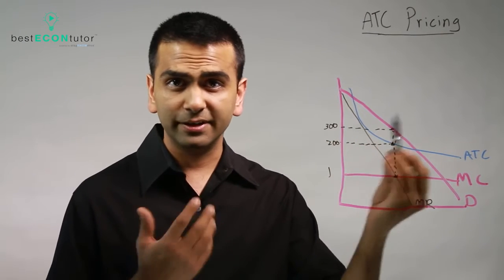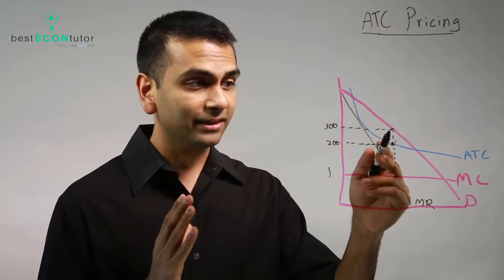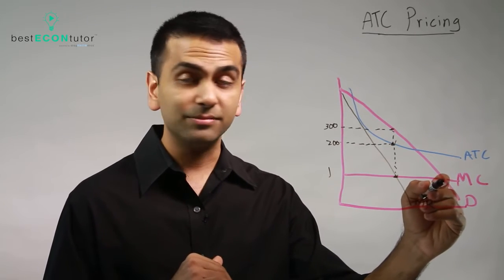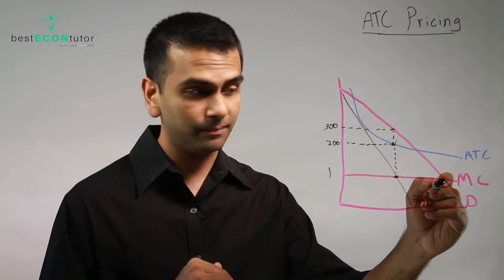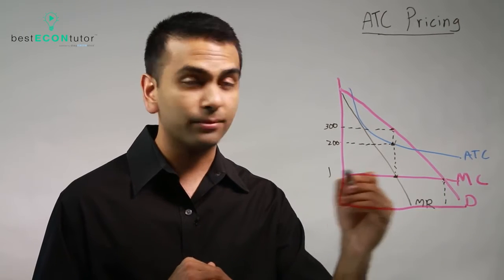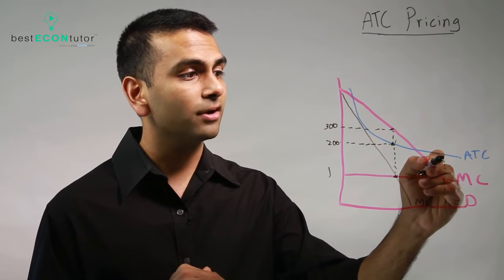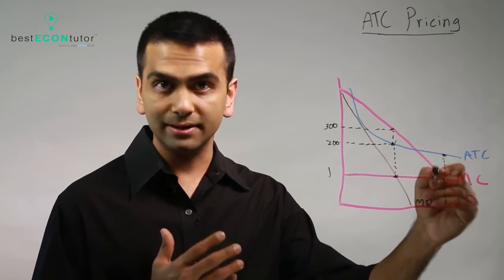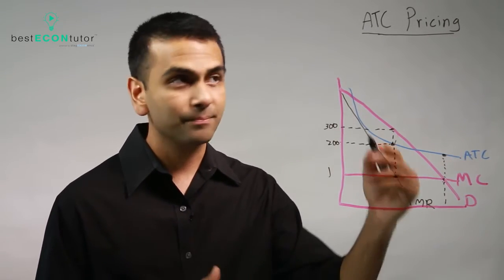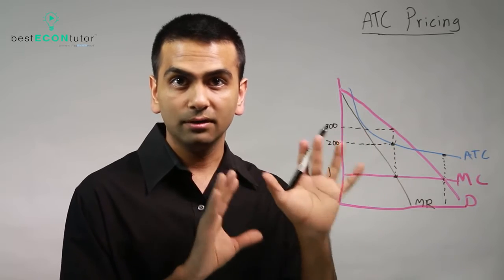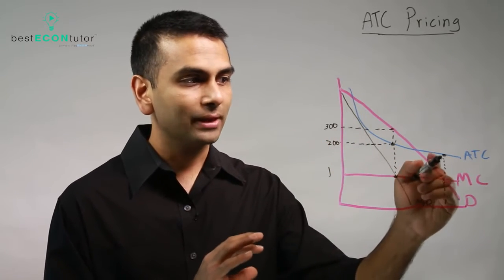But let's say somebody did MC pricing. So now you're over here—you're forced to make this quantity at a price of one, and now your average cost per person's way higher than a dollar, so you're making a loss. So that's why MC pricing on a natural monopoly will actually make them make a loss.